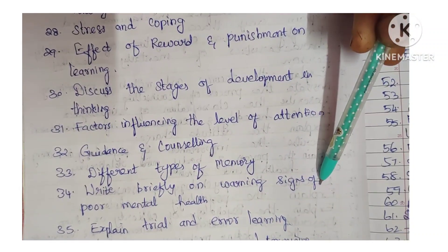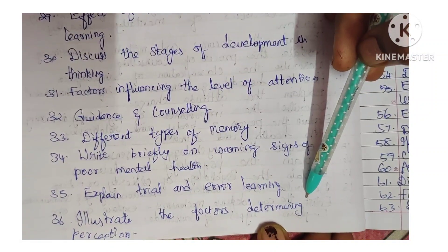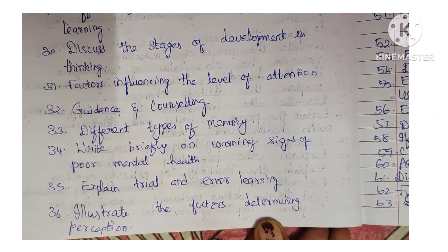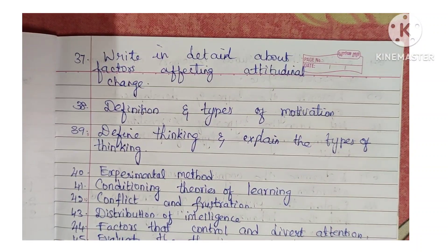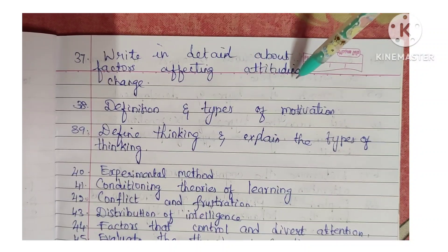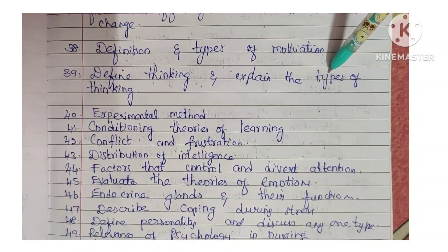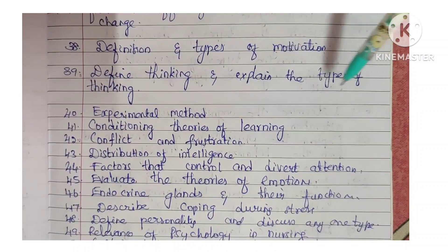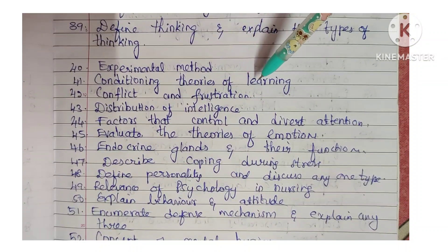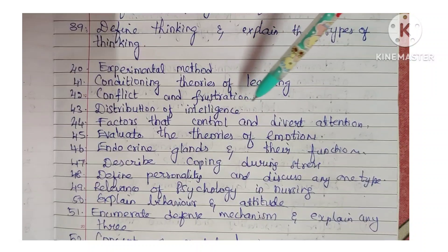Next: write briefly on warning signs of poor mental health. Next: explain trial and error learning. Next: illustrate the factors determining perception. Next: write in detail about factors affecting attitudinal change. Next: definition and types of motivation. Next: define thinking and explain its types. Next: experimental method. Next: conditioning theories of learning. Next: conflict and frustration.